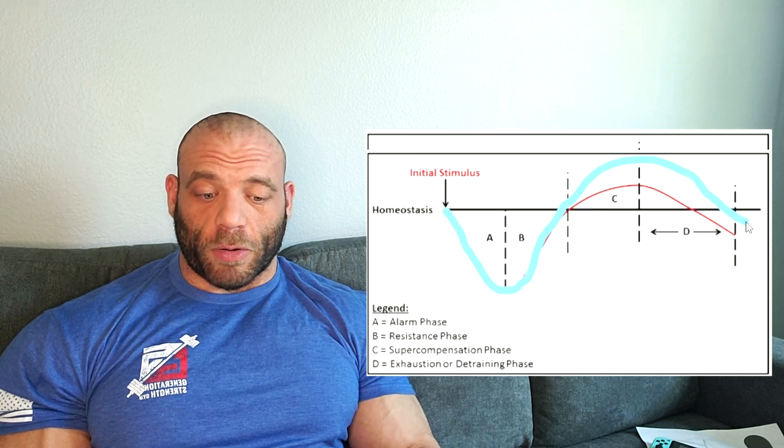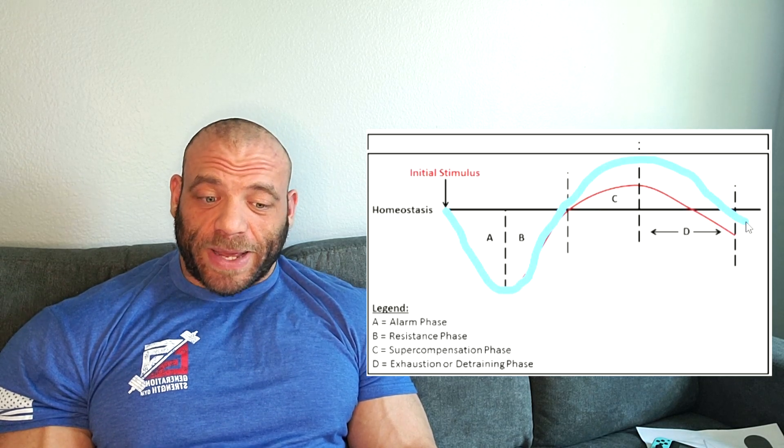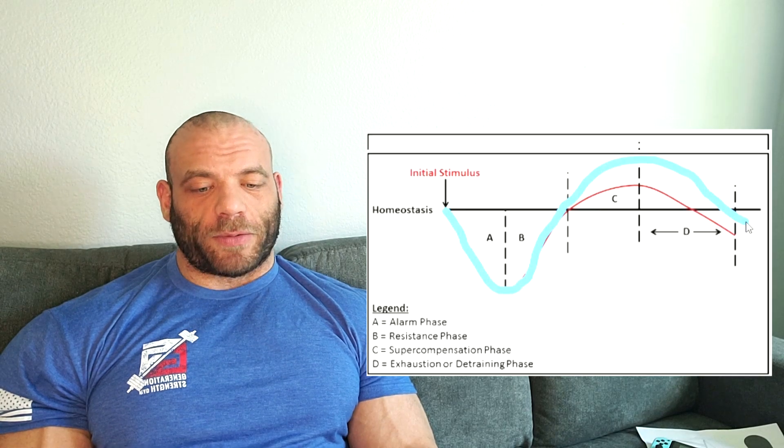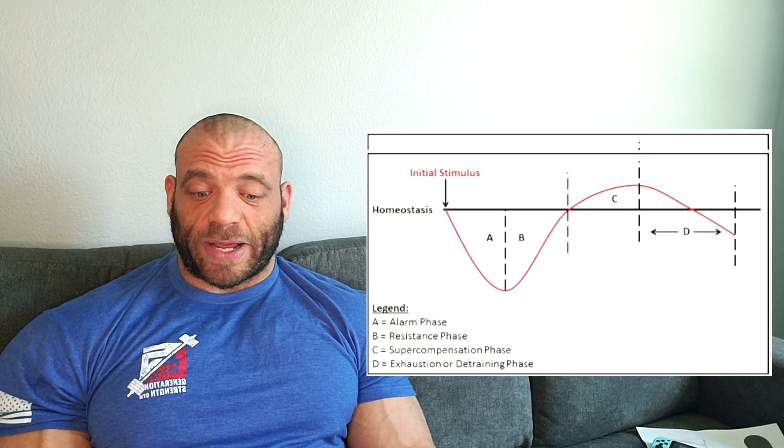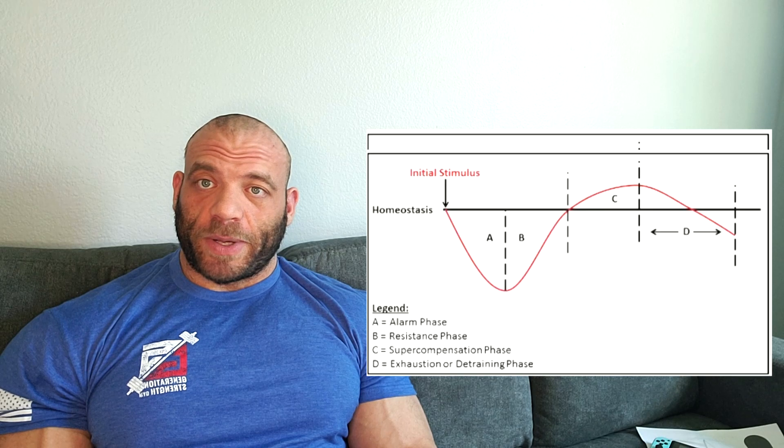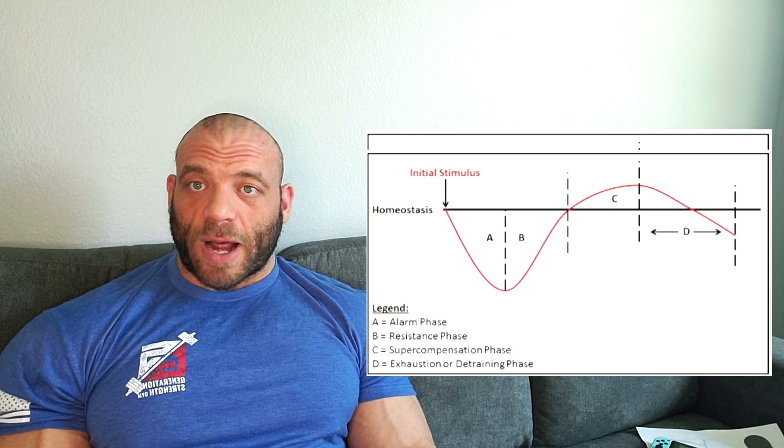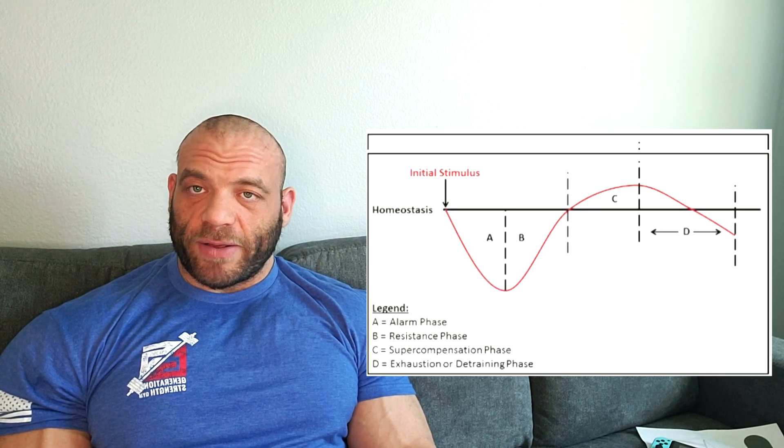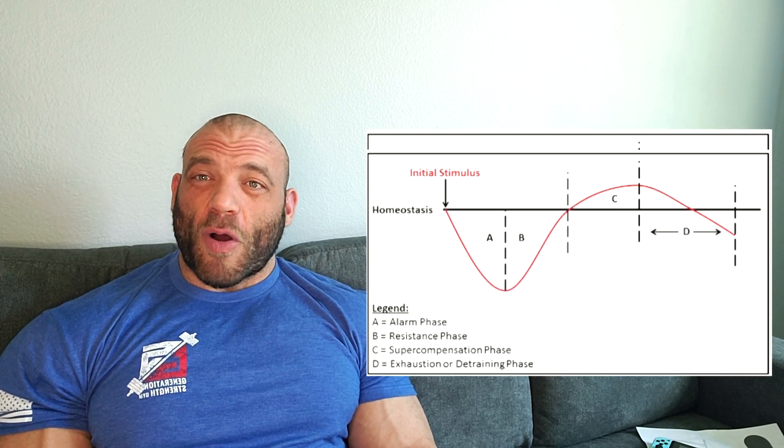So how can we change those alarm and resistance stages? Well that's where recovery comes in. First of all I want to be upfront - some of this is genetic, some people recover faster than others, some people naturally have shorter alarm and resistance stages. But there are other things that we can do. When we improve our sleep, when we improve our diet, when we do our cardio for health, all these things are going to decrease the length of the alarm and resistance stages.